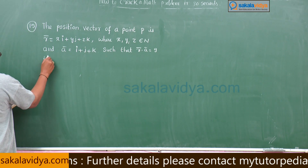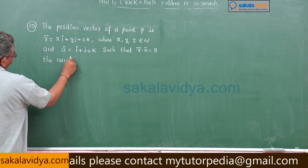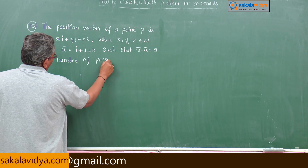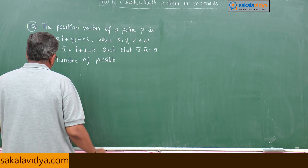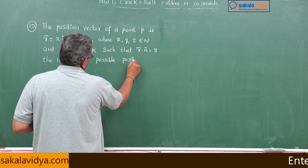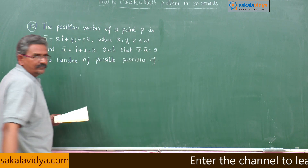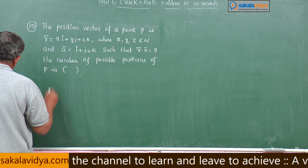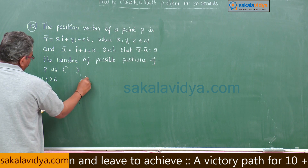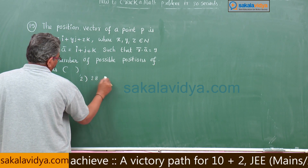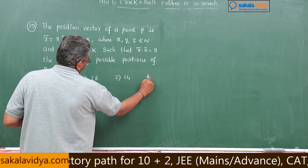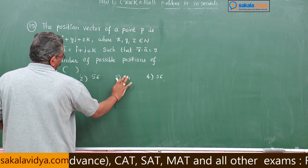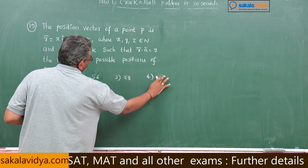The number of possible positions of P is: first option 36, second option 28, third option 14, fourth option 56.